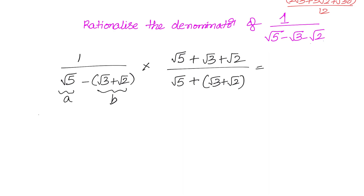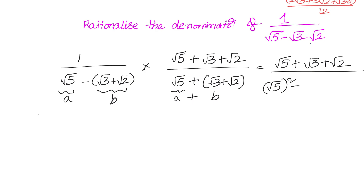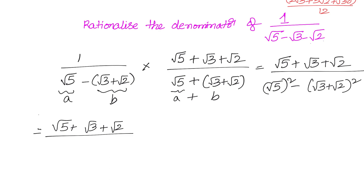In the numerator we write √5 + √3 + √2. In the denominator, (a − b)(a + b) = a² − b², so we get (√5)² − (√3 + √2)². Applying the (a + b)² formula: (√3 + √2)² = 3 + 2 + 2√6. Hopefully you're okay with that — that's the a² + b² + 2ab formula.